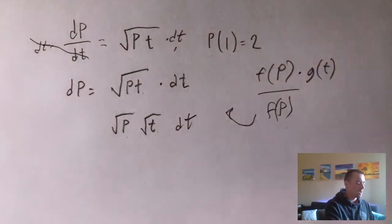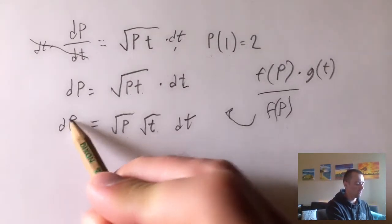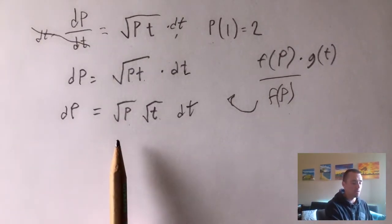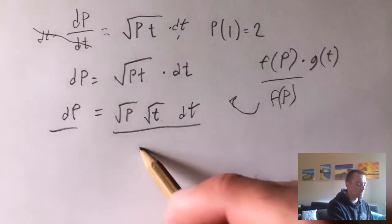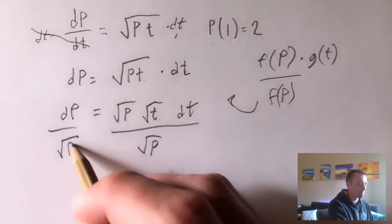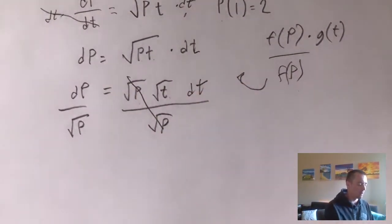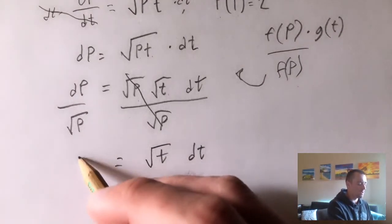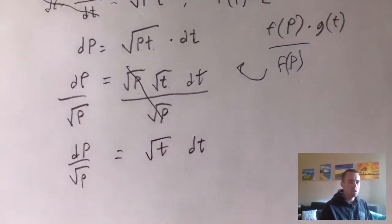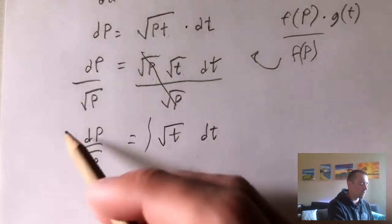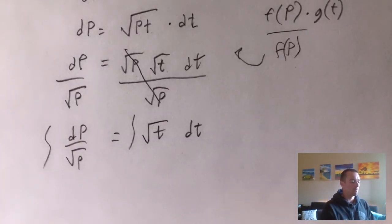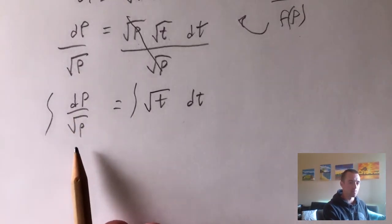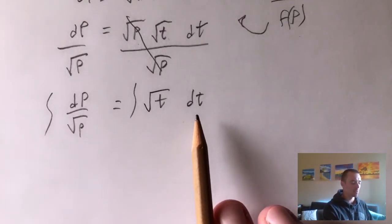We still have DT on the right and DP on the left. Now we divide both sides by the square root of P, which cancels it on the right side, giving us the square root of T times DT equals DP over the square root of P. We can now throw an integral sign on both sides and integrate. On the left we integrate with respect to T, and on the right with respect to P.